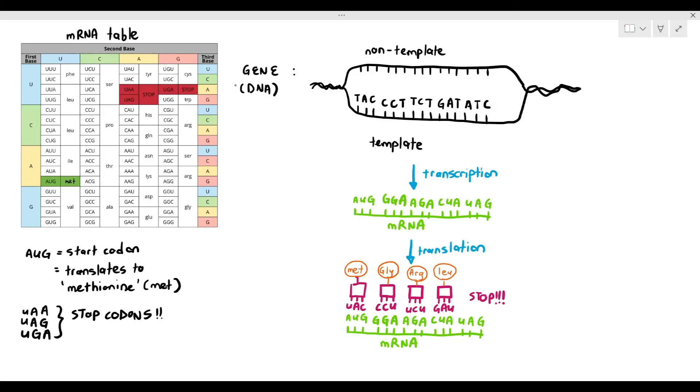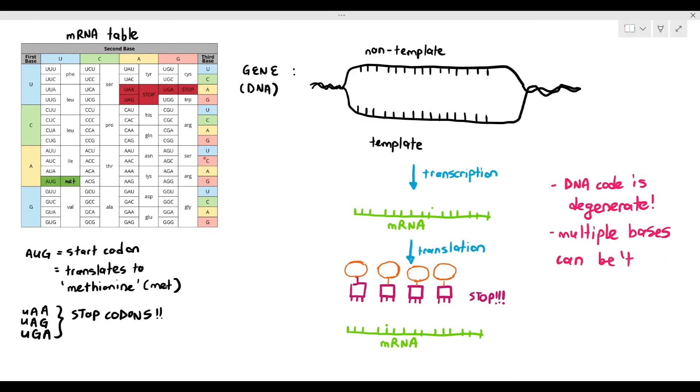Let's try another one. For the fun of it, just try another one out. Oh, there's another thing that we also have to know about DNA. The DNA code is degenerate. Now, what do I mean by degenerate? It means that multiple bases can be translated into the same amino acid. Now, what do I mean by that?